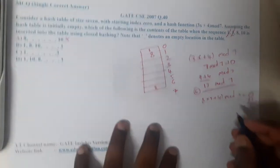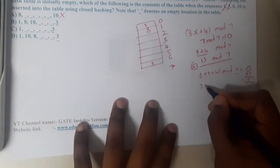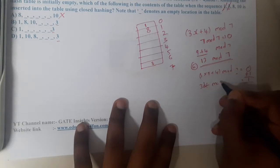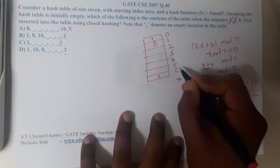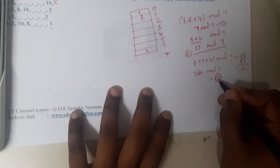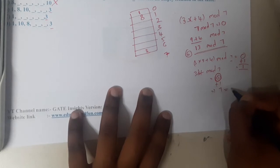Now let us do for 10. 10 times 3 is 30, that is 34 mod 7, which is also 6. Again 6 is having a clash. It cannot take place at 6.